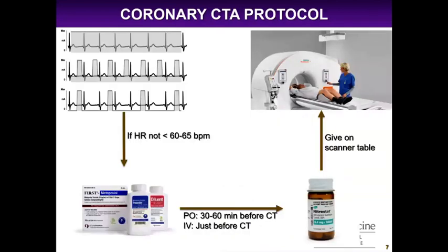This is an example of the coronary CTA protocol. The first thing we do is check if the patient's heart rate is well controlled — we want it less than 60 to 65 beats per minute. If not, we give metoprolol or ivabradine to slow the heart rate down. Oral metoprolol is given 30 to 60 minutes before the CT scan; if IV, it's right before the CT. When the patient is on the table, we give nitroglycerin to dilate the coronary arteries so we can better visualize them.